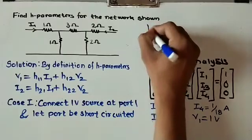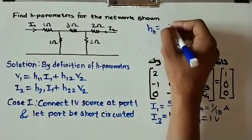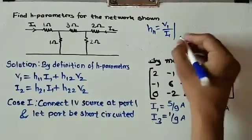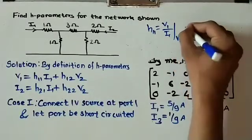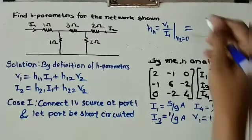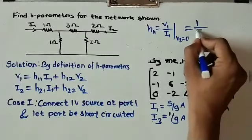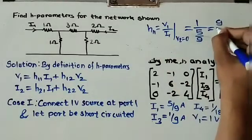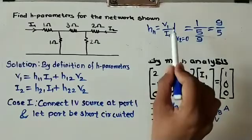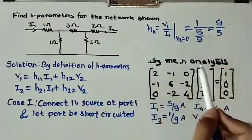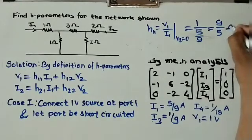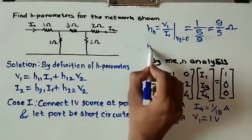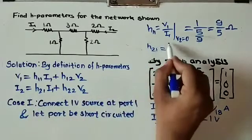So h11 equals v1 over i1 with v2 equals 0. The value of v1 is 1 volt and i1 is 5/9, therefore h11 equals 9/5 ohms. The unit is ohms since it is a voltage-to-current ratio.